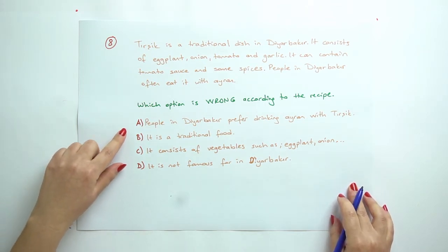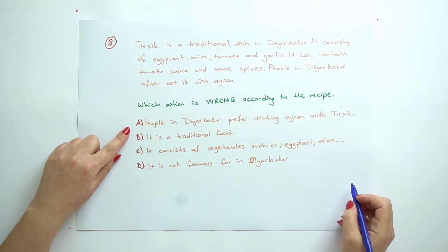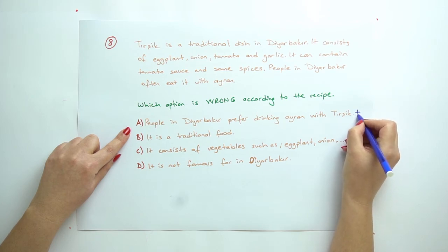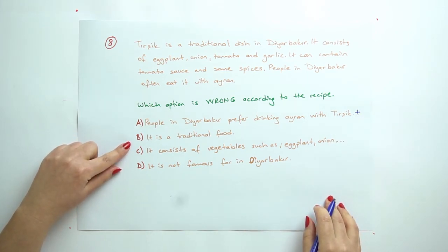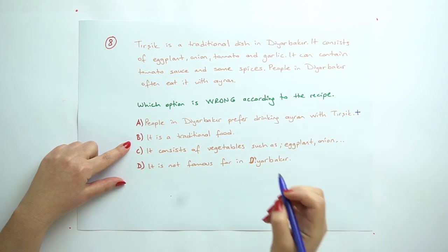Let's have a look at the options. A: People in Diyarbakır prefer drinking ayran with Trishik. Yes, this is true. B: It is a traditional food. Yes, it's true again. C: It consists of vegetables, for example, such as eggplant, onion. Yes.